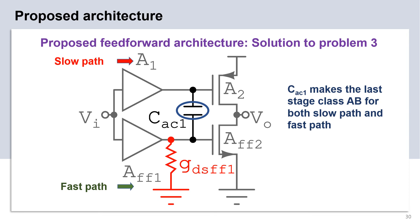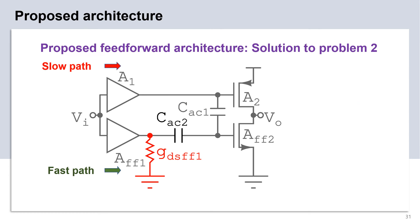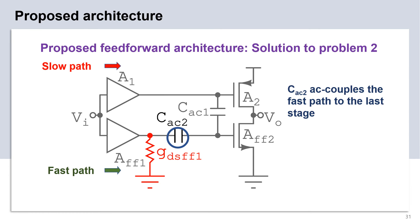Now, by design, we want the buffer's output conductance to be high. Thus, a large CAC1 will reduce the slow path gain. Hence, we cannot DC couple the fast path to the last stage. Hence, we add a coupling capacitor CAC2 as shown in the slide.